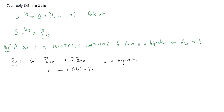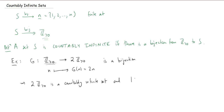Because we have a bijection from the positive integers to twice the positive integers — the even positive integers — the set of even positive integers is a countably infinite set. Furthermore, because we have a bijection, our definition of cardinality — of having the same cardinality — means the positive integers and the even positive integers have the same cardinality. So the cardinality of the positive integers equals the cardinality of the even positive integers.